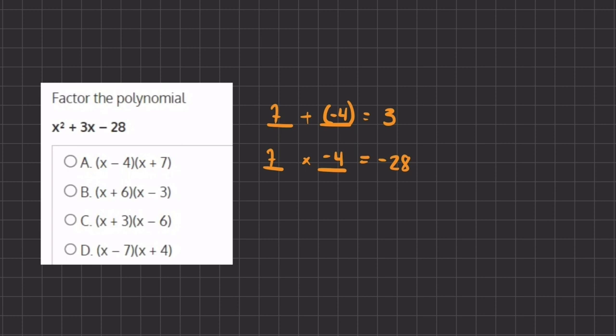Therefore, answer A is our correct answer. Our factors are (x - 4) and (x + 7).